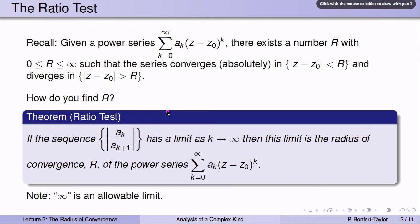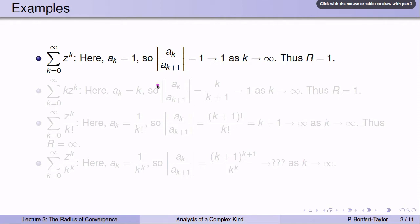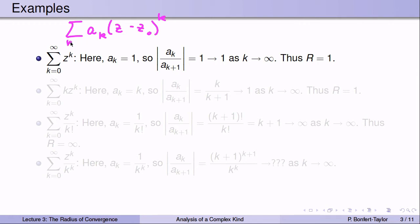Let's look at some examples. Note that infinity is an allowable limit — if |a_k / a_{k+1}| goes to infinity as k goes to infinity, then the radius of convergence R is infinity, meaning the series converges for all z in the complex plane. Consider the series sum of z^k. Here a_k equals 1 and z_0 equals 0. Looking at a_k divided by a_{k+1}, that's 1 over 1, which equals 1 in absolute value and converges to 1. Therefore, the radius of convergence is 1.